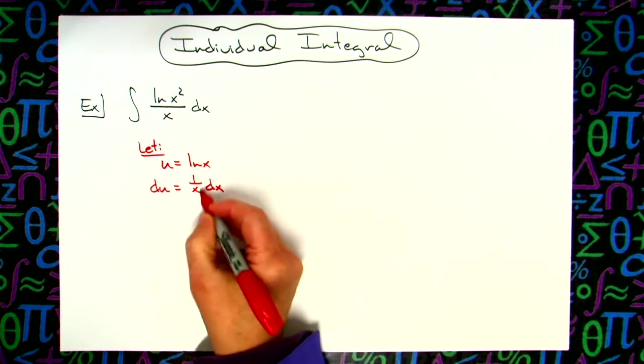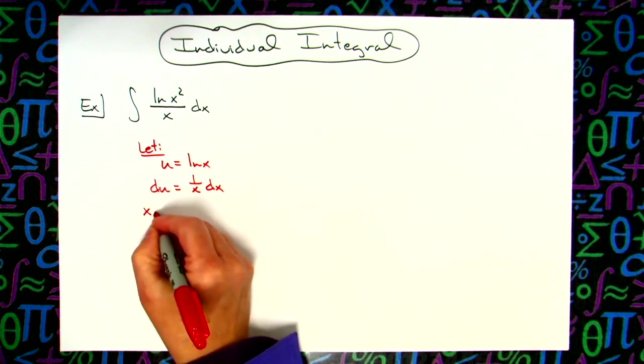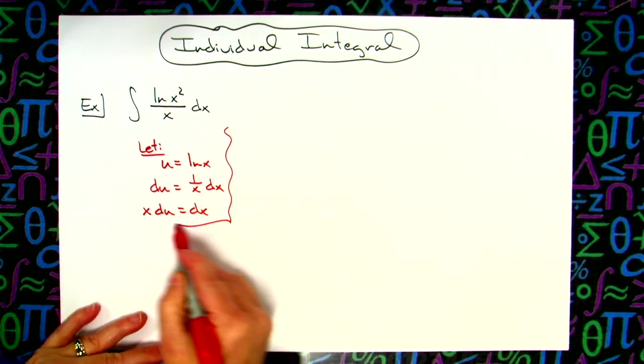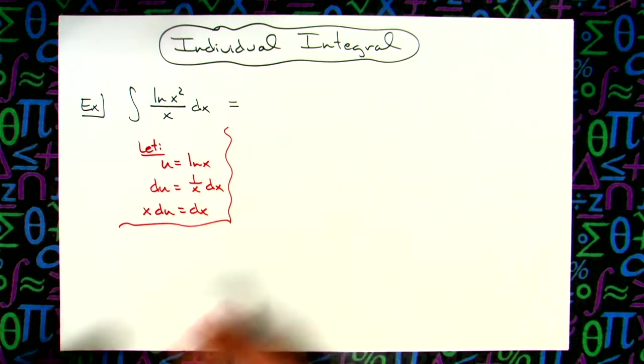I like to solve all the way down for dx. So I'm going to multiply both sides of that equation by x. I'll have x du is equal to dx. Now I'm going to come back up. Normally we come back up to this original equation and we immediately start substituting.